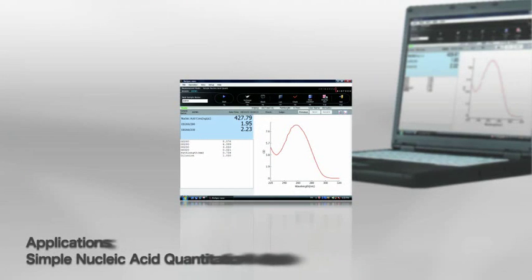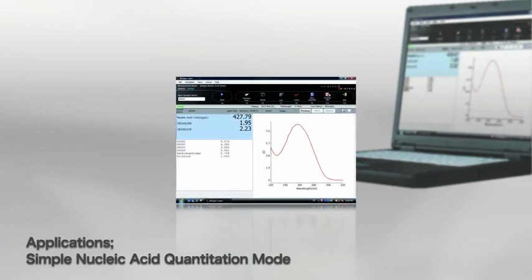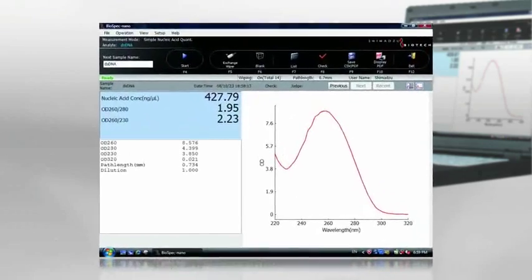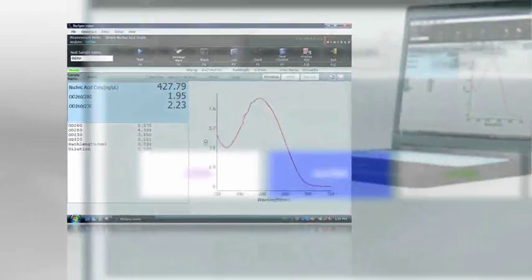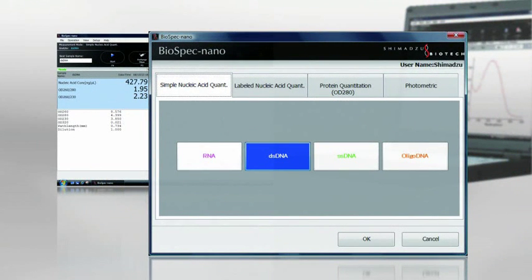In addition to the nucleic acid quantitation and labeled nucleic acid quantitation, BioSpec Nano has protein quantitation and optical density measurement for a specific wavelength. This versatile unit will function in a multitude of analytical methods.